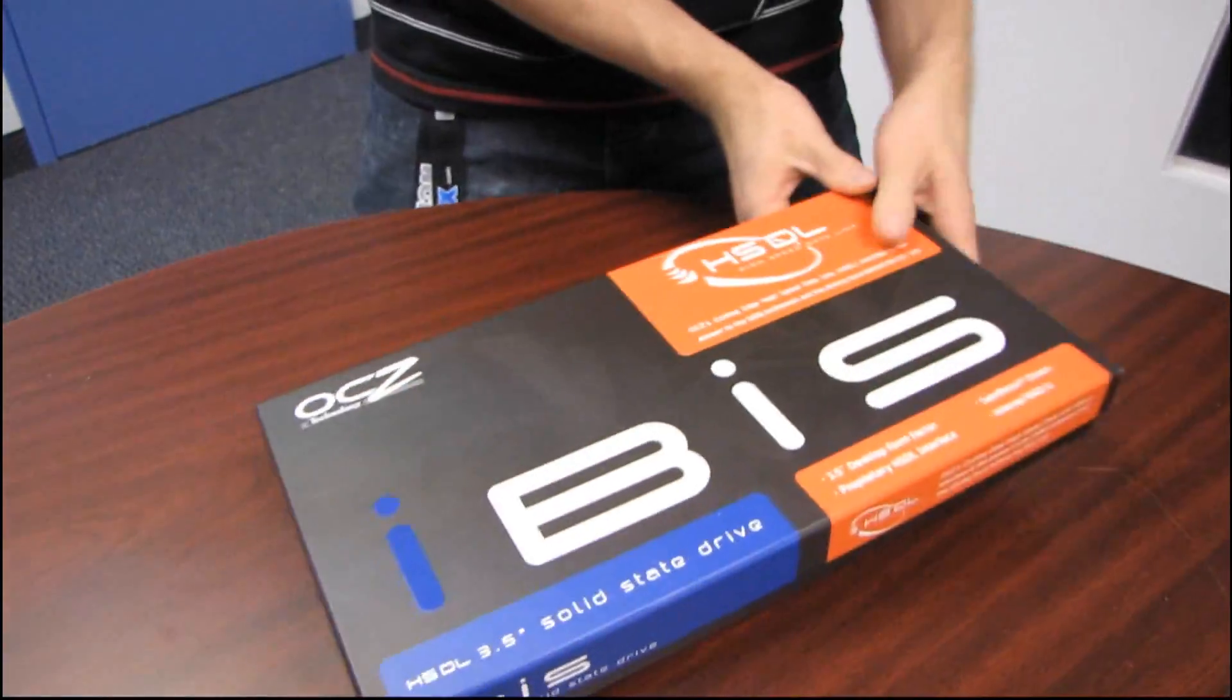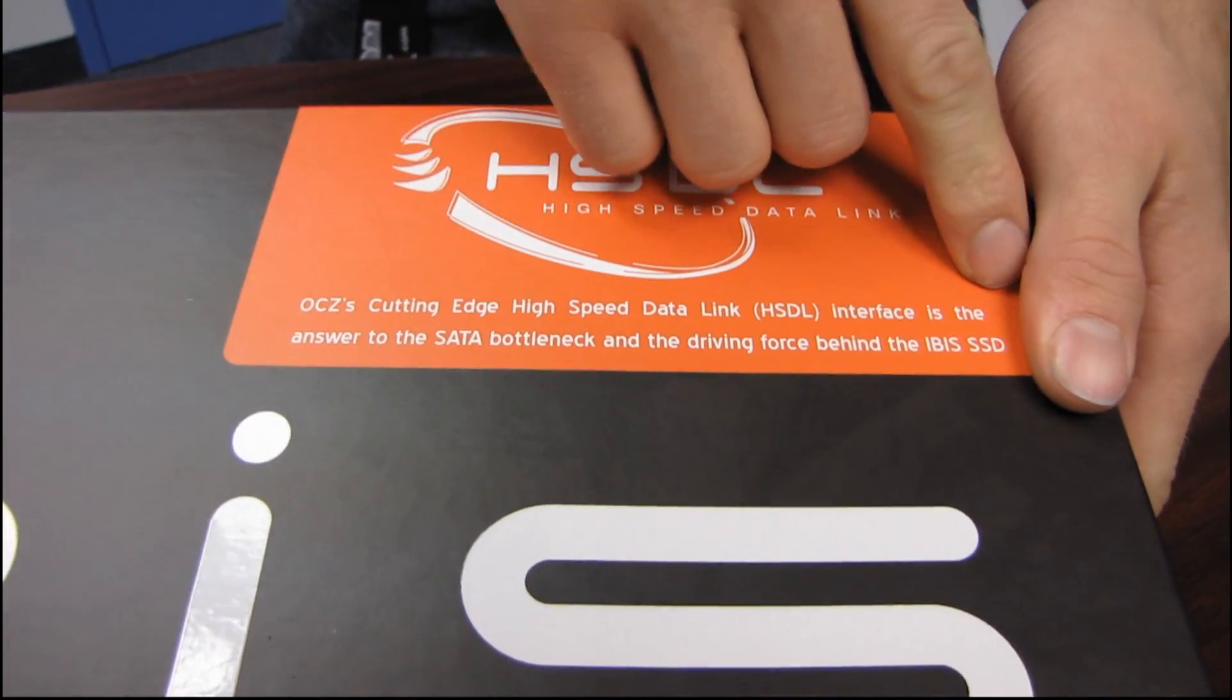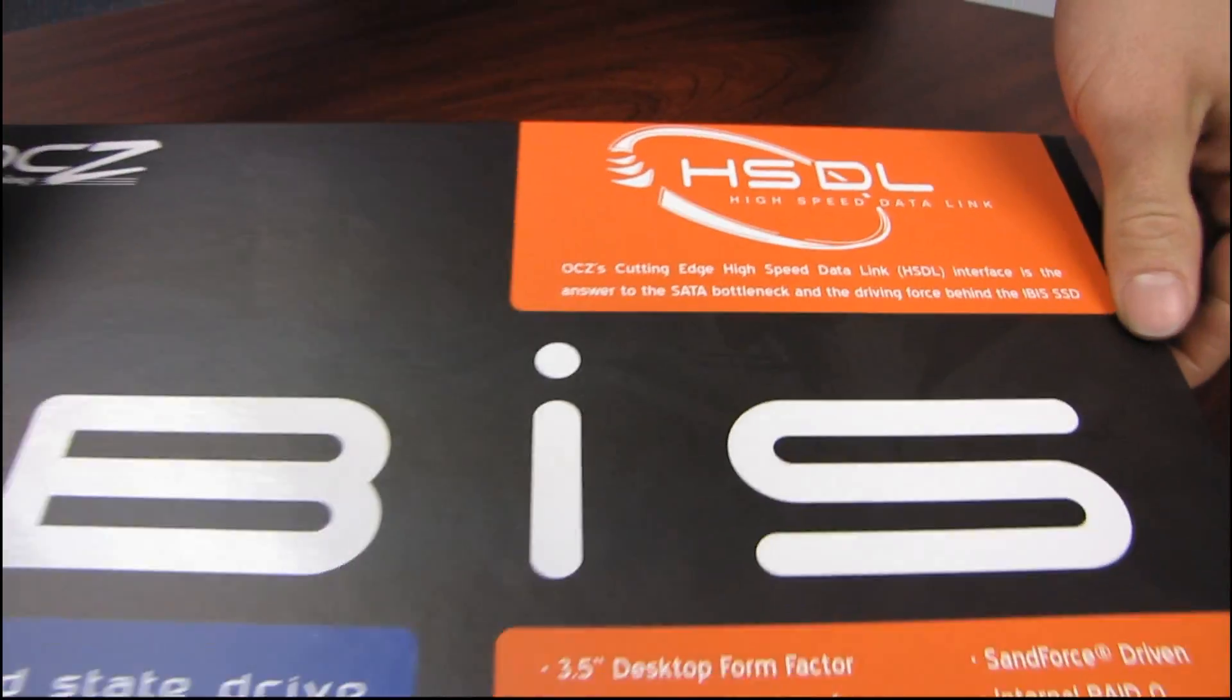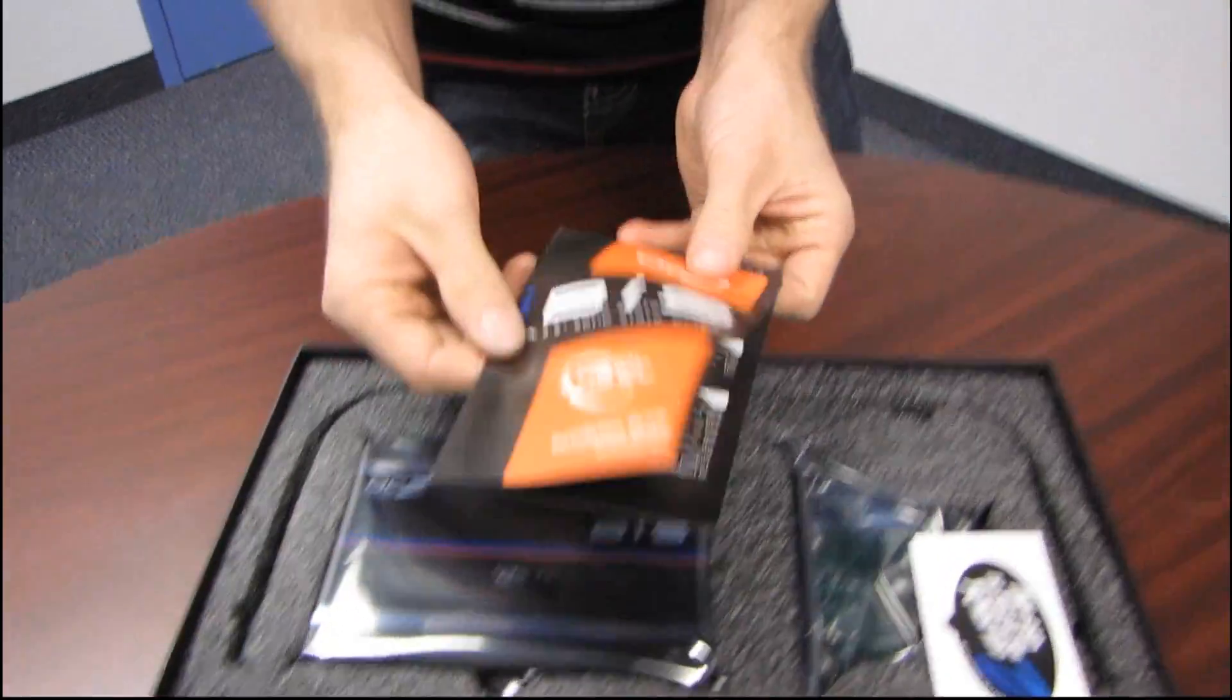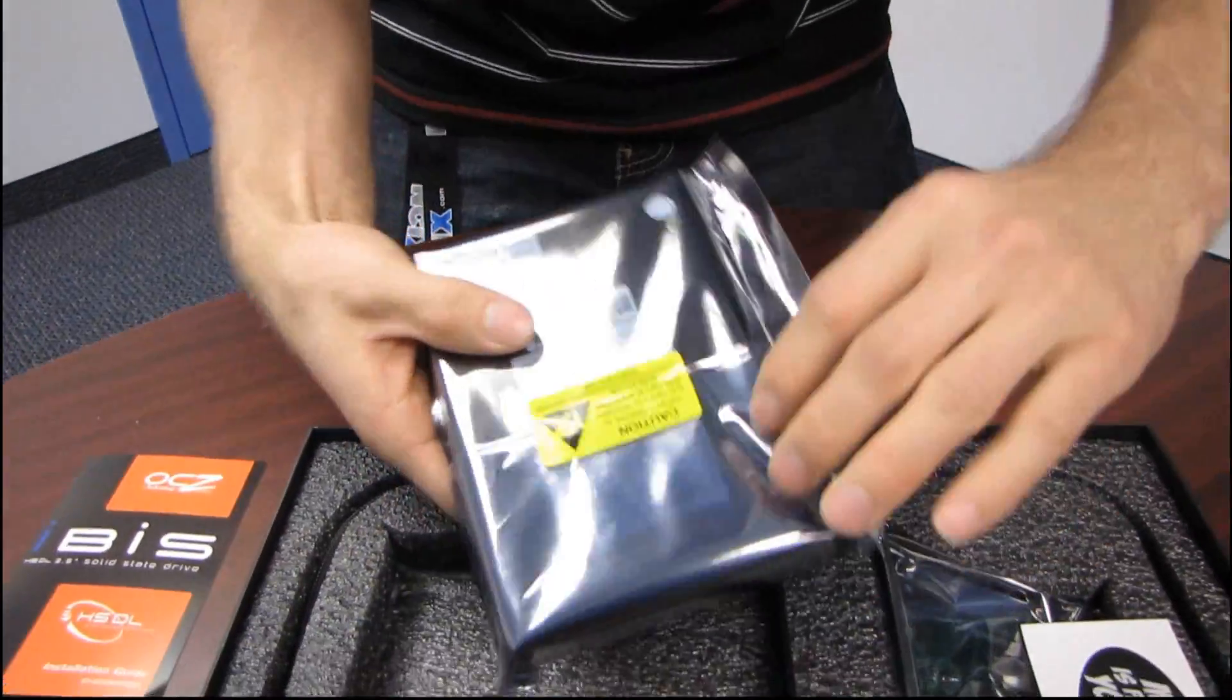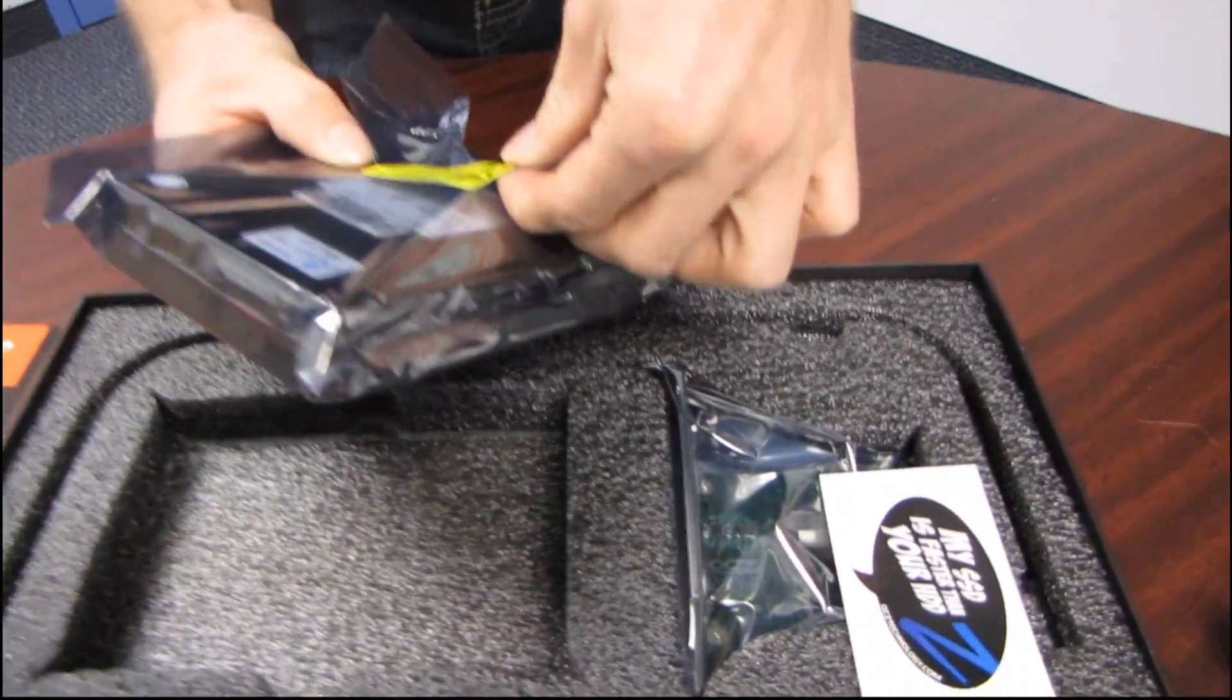So let's go ahead and open up the box on OCZ's cutting edge high speed data link. Hey, I got it right. Interface, and it is the answer to the SATA bottleneck and the driving force behind the IBIS SSD. So the SSD runs off of internal RAID 0. So that's how they're able to take four controllers. So that is four SanForce controllers. They put them all together. Here, let me just see if I can get this opened up here.